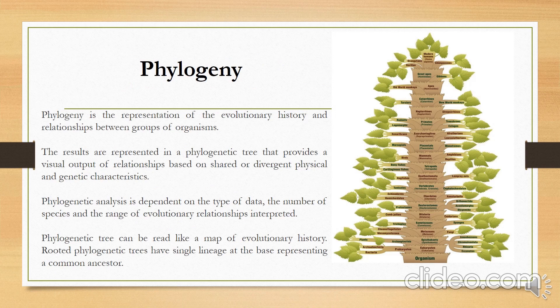A phylogenetic tree is a representation of the evolutionary history and relationships between groups of organisms. It provides a visual output of relationships based on shared or divergent physical and genetic characteristics. In phylogenetic analysis, it is dependent on the type of data, the number of species, and the range of evolutionary relationships interpreted. A phylogenetic tree can be read like a map of evolutionary history. Rooted phylogenetic trees have a single node at the base representing a common ancestor.